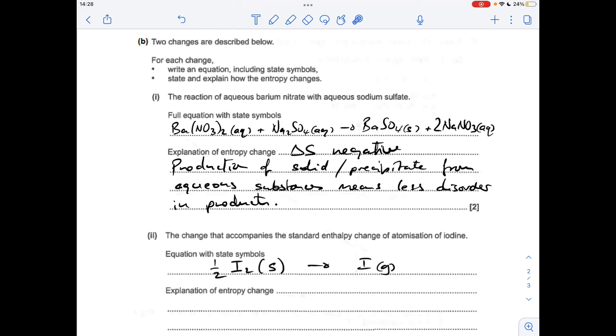The second part of the question is testing your knowledge of definitions. Atomization is all about the production of one mole of gaseous atoms from the element in its standard state. So obviously iodine gas produced from half a mole of iodine solid. The important thing here is you're going from solid to gas and so that's an increase in entropy, so delta S would be positive.